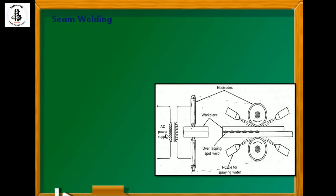After passing AC power through both roller electrodes, current flows and creates resistance between the two sheet metals — sheet metal one and sheet metal two. This resistance generates heat, and by applying pressure using hydraulic systems or a cylinder piston system, a joint is made between the sheet metals. In seam welding, it produces a continuous joint, and you can control the temperature of the electrode materials using a water spray nozzle.